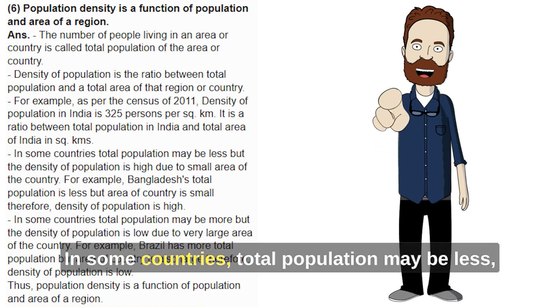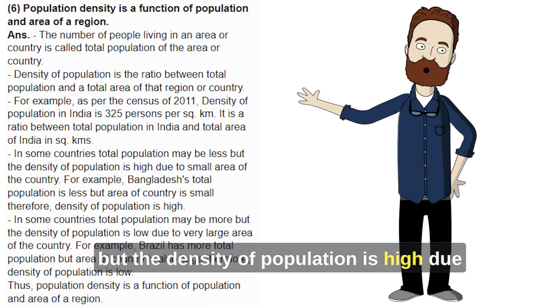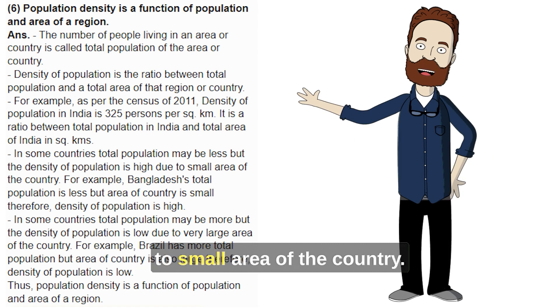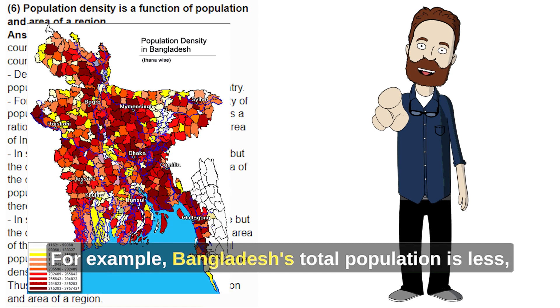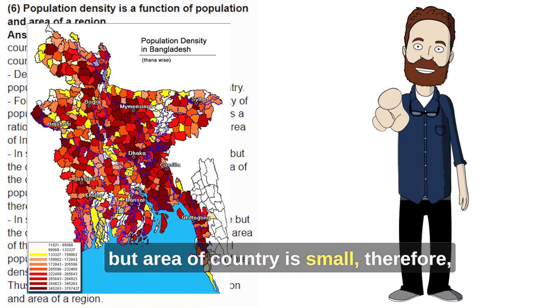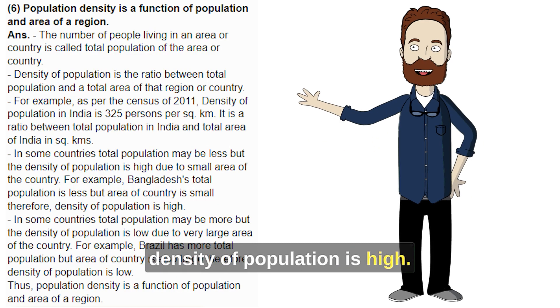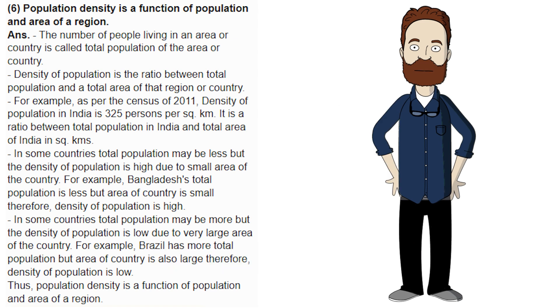In some countries, total population may be less but the density of population is high due to the small area of the country. For example, Bangladesh's total population is less but the area of the country is small, therefore density of population is high.